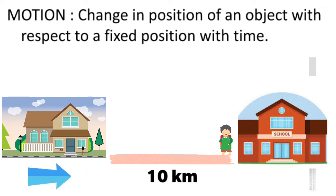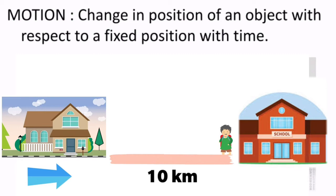By this we can say that the boy is in motion, because at 9 am — specifying the time — he is at home, which is a fixed position. After 5 minutes there is a change in position; he is 5 kilometers away from home. So his position has changed with respect to a fixed position and time, and at 9:05 am he is 5 kilometers away from home.